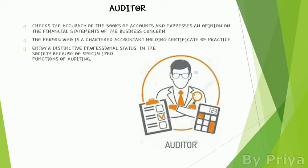We have now seen the relationship of auditing with other disciplines. An auditor is a person who checks the accuracy of the books of accounts and expresses an opinion on it. The auditor reviews the report submitted by the firm and gives an opinion regarding it. An auditor must be a chartered accountant holding a certificate of practice.